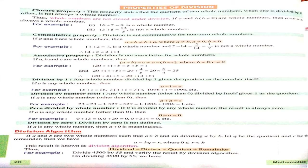Closure property: this property states that the quotient of two whole numbers, when one is divided by the other, is not always a whole number. See the example: 16 divided by 2 equals 8, so 8 is a whole number. Then 13 divided by 5 equals 13/5, so 13/5 is not a whole number.